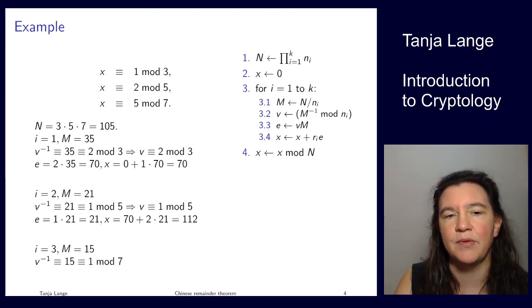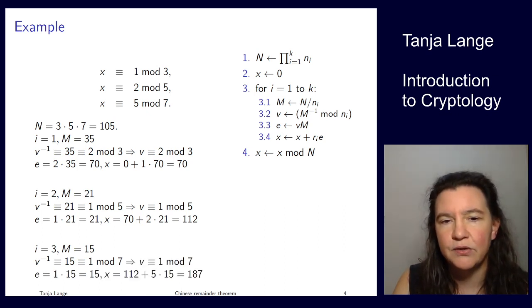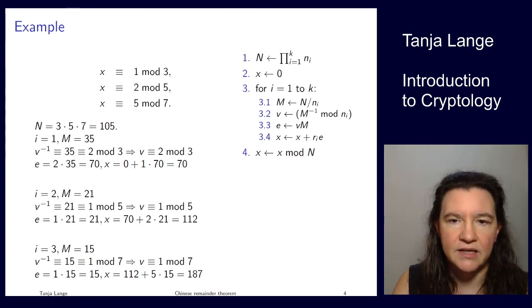And finally, step 3. This M is 15. 15 mod 7 is 1, so again I got myself a very easy to invert number. This would normally be more effort. So I'm getting that v itself is also 1 mod 7, and I'm getting that the final x is 187.